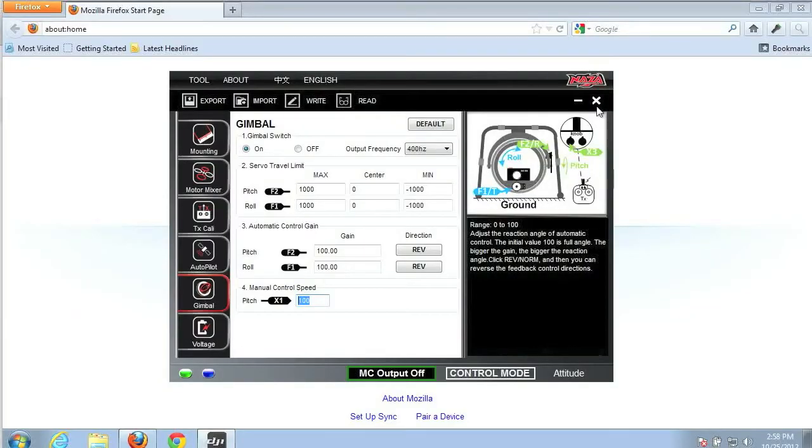Your NASA gimbal settings are pretty straightforward. Once you get into this system, you turn the switch to on and set your output frequency. Under most normal circumstances the default will work. I have a fancy digital servo that requires a higher frequency, so that's why that's bumped up.